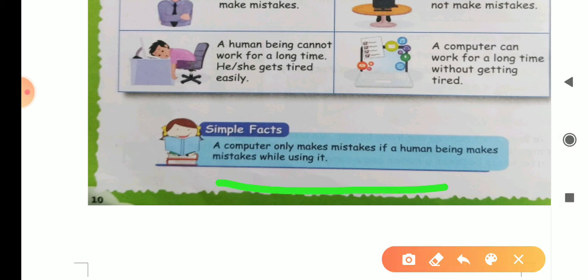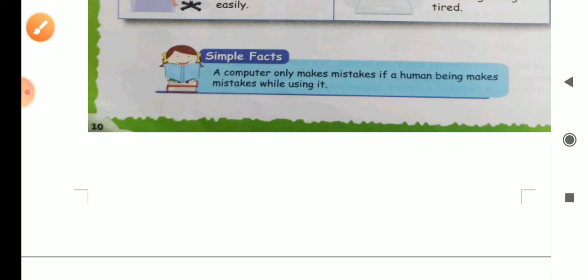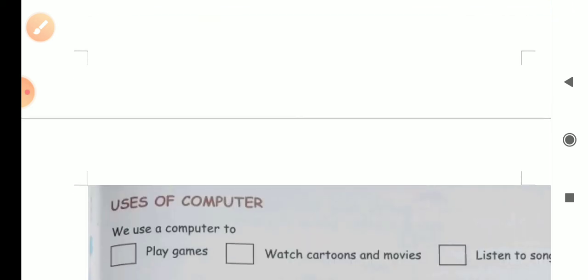A computer only make mistake if human beings make mistakes while using it. A computer can make mistake when a human being gives wrong instructions. Suppose you type wrong numbers, then obviously computer will do wrong calculation. The numbers you put, the data you put, according to that computer works.